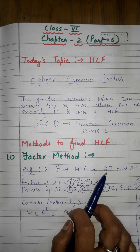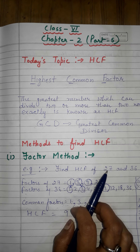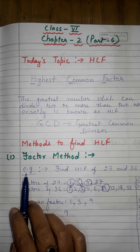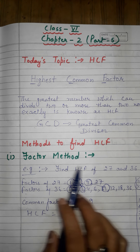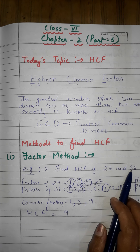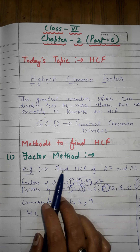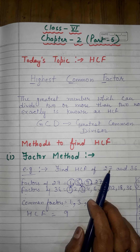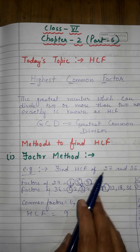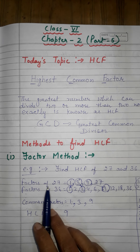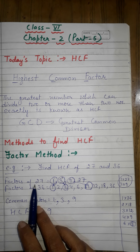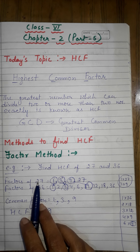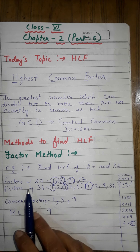In the Factor Method, to find the HCF of two or more numbers, first we write the factors of each number. For example, I have taken two numbers: 27 and 36, and now I will find the HCF of these two numbers. First I will write the factors of 27.